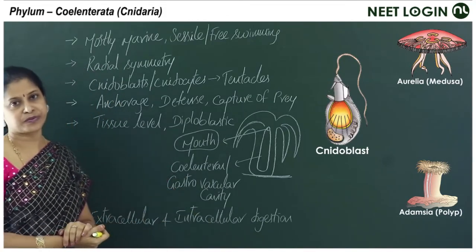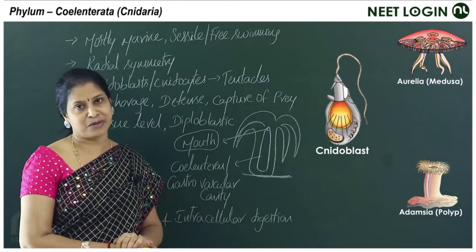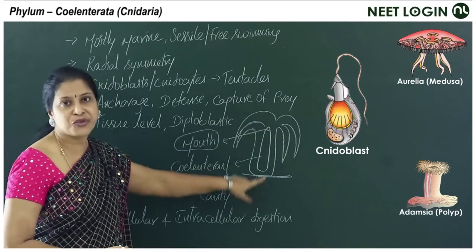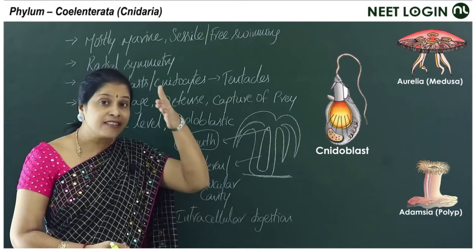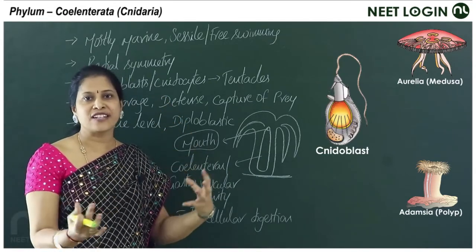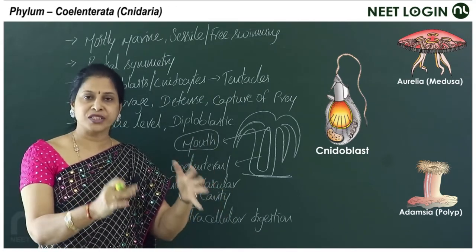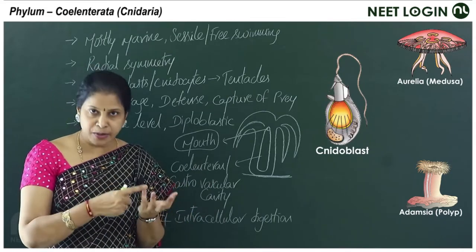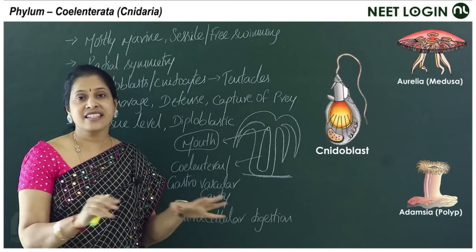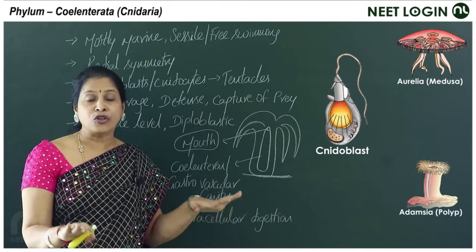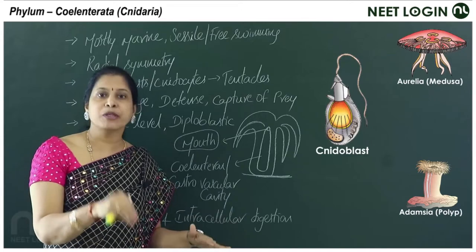Cnidarians exhibit radial symmetry. All are aquatic — mostly marine but some freshwater forms exist. The phylum is named Cnidaria due to the presence of cnidoblasts or cnidocytes on the tentacles. These are stinging cells, and their presence gives the phylum its name.